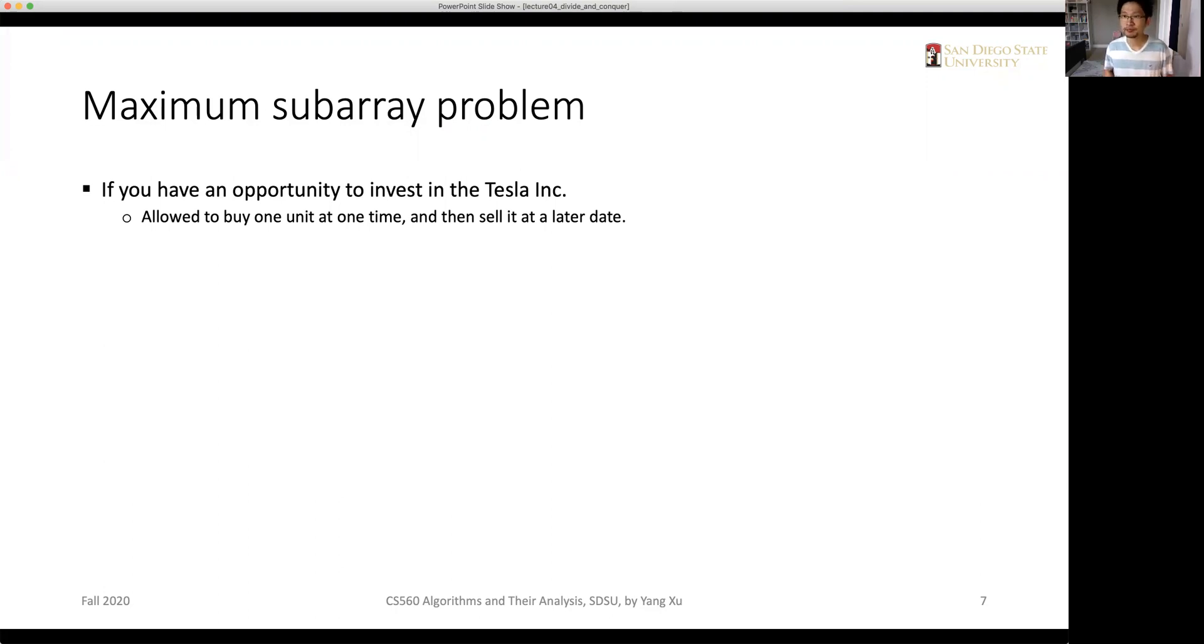So we use some cheating here to make it a more simple question. We are given all the information - we know about the future of prices. So all we need to do is to choose to buy at a low point and to sell at a high point. And the only limit is that we need to first buy and then sell. So the sell date must be in the future, must be after the buying date.